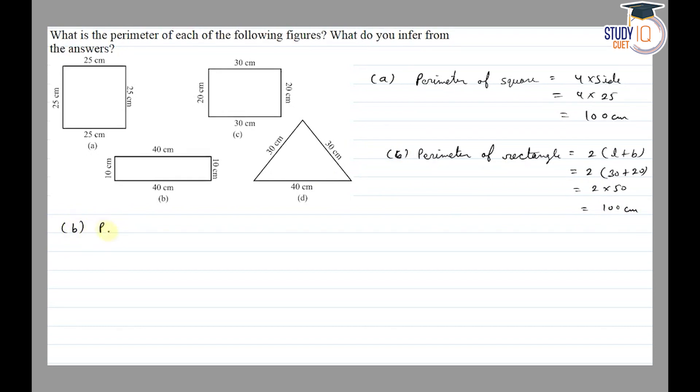Now part (c). In part (c), we have a rectangle. So perimeter of rectangle is equal to 2 into length plus breadth. Length given is 40 and breadth given is 10.